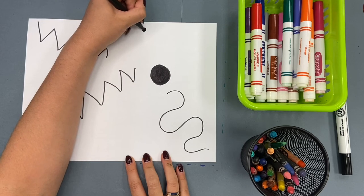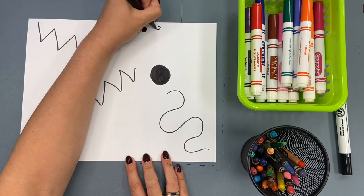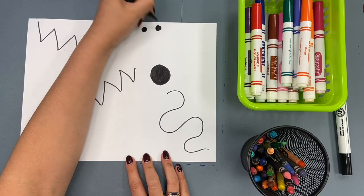Next up is two smaller dots. Again, put them wherever you like.